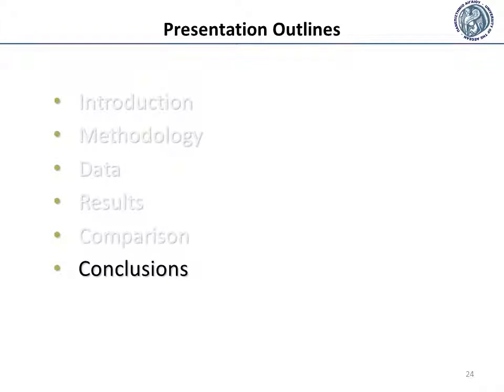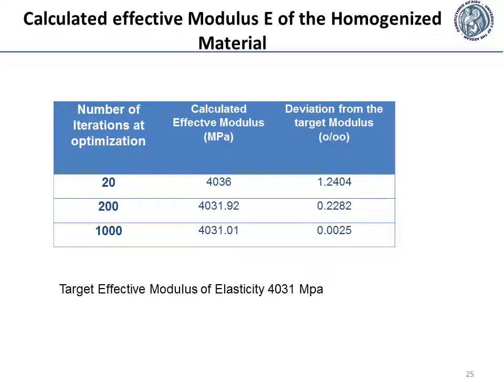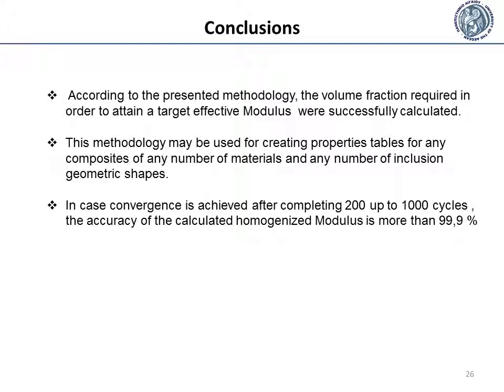To conclude, as the table shows, in case the number of iterations is between 200 and 1000, the calculated modulus is close to 4031 MPa, which is the target modulus. Also, in case the number of iterations is between 200 and 1000, the deviation of the calculated effective modulus from the target effective modulus is less than 1 per mil. To sum up, according to the present methodology, the volume fraction required to obtain the target effective modulus was successfully calculated. This methodology may be used for creating property tables for any composite of any number of materials and any number of inclusion geometric shapes. In case convergence is achieved after completing from 200 up to 1000 cycles, the accuracy of the calculated homogenized modulus is more than 91.1%.